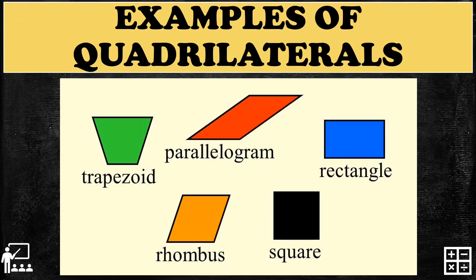And these are the examples of quadrilaterals. There are five examples of quadrilaterals, which are the trapezoid, parallelogram, rectangle, rhombus, and square — which I'm going to discuss after my triangle video.